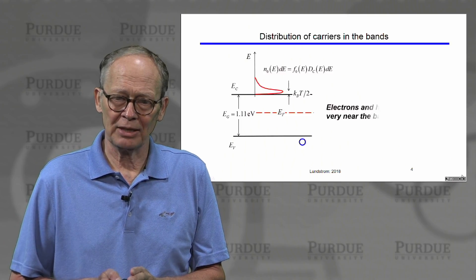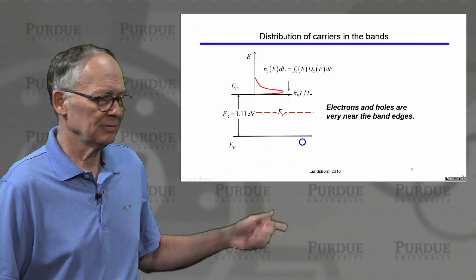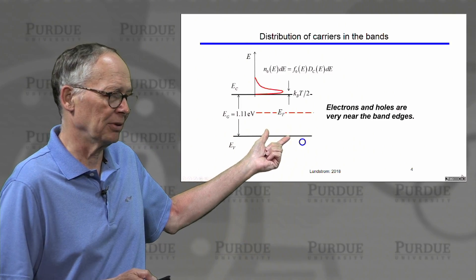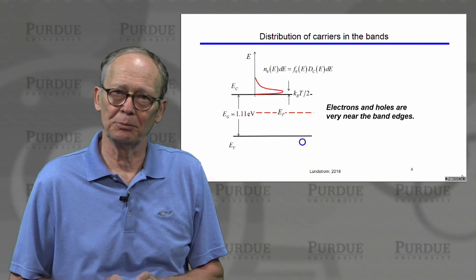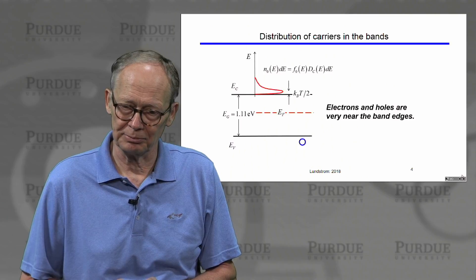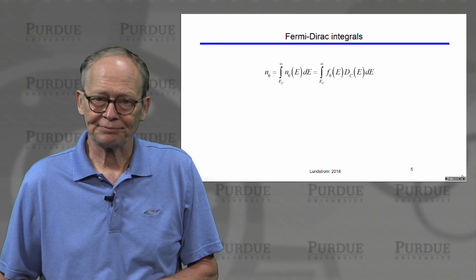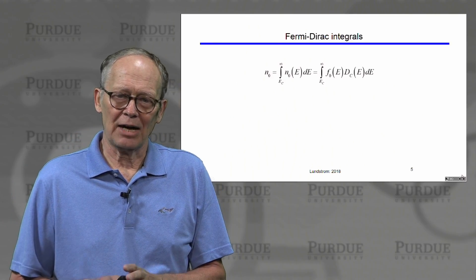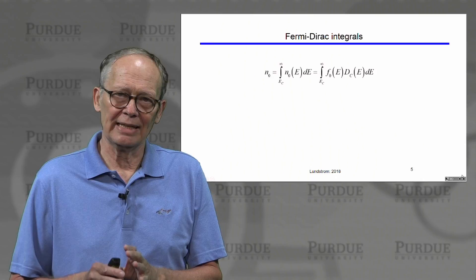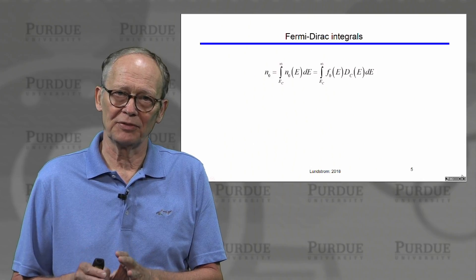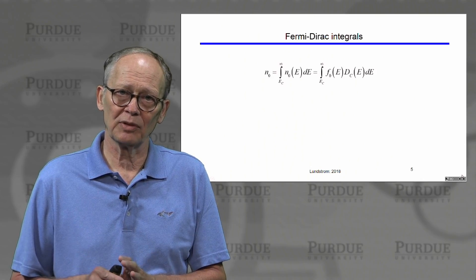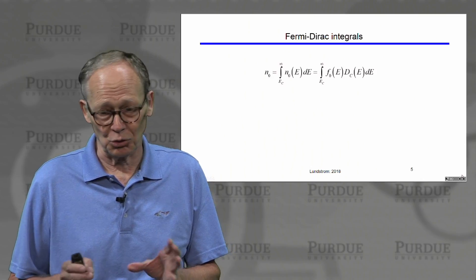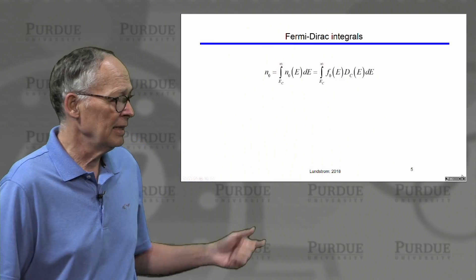The same thing goes for the top of the valence band. Holes are near the top of the valence band, and electrons are near the bottom of the conduction band. We then asked ourselves how to relate the position of the Fermi level to the total number of electrons in the conduction band and the total number of holes in the valence band.